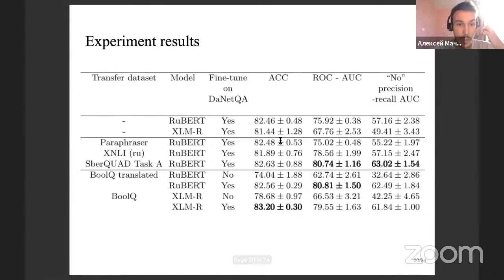In summary, as you can see, the best results are reached by XLM-R model, and the second result in our top is reached with pre-training on translated BoolQ. Thus, as expected, language transferring shows the best results because its dataset is most similar to ours. So BoolQ is yes/no question answering, and our dataset is also yes/no question answering.